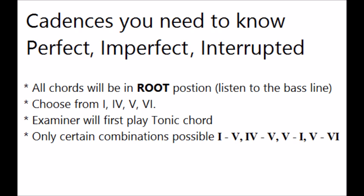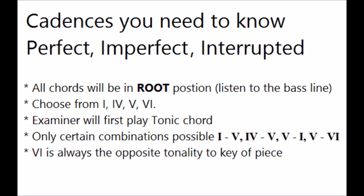The tonality of chord 6 is always the opposite to the key of the piece. That is to say, in a major key chord 6 will be minor, and vice versa. So chord 6 should be easy to spot. With all this theory knowledge, a process of elimination should make it easy to identify the chords, and from there, identifying the cadence even easier.